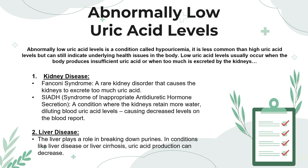The causes of abnormally low uric acid levels include, at number one, kidney disease — specifically Fanconi syndrome and SIADH. Fanconi syndrome is a rare kidney disorder that causes the kidneys to excrete too much uric acid. In the syndrome of inappropriate antidiuretic hormone secretion (SIADH), the kidneys retain more water, diluting blood uric acid levels and causing decreased levels on a blood report. At number two, we have liver disease — the liver plays a crucial role in breaking down purines, and in conditions like liver disease or cirrhosis, uric acid production can decrease.